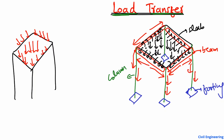So the load is transferred from the beams into the columns. In the next stage, when the column takes the load, as a vertical member resisting axial compressive load, it transfers the load into the footings. Now the load is acting on the footing — this is the way how load transfers through the reinforced concrete members.